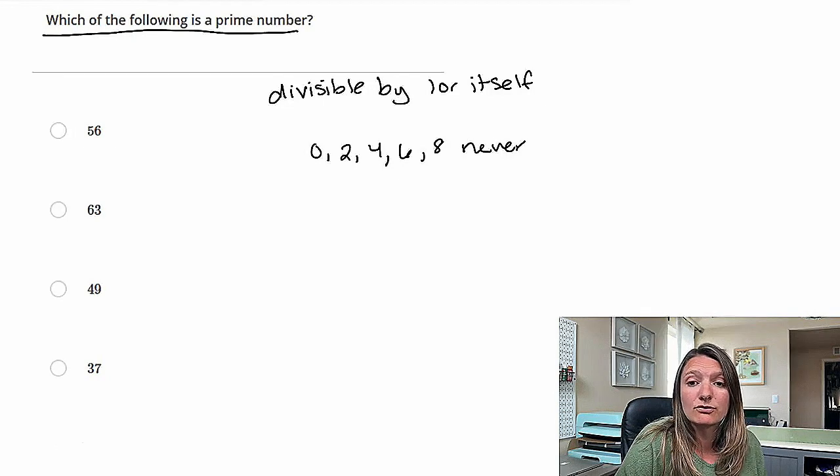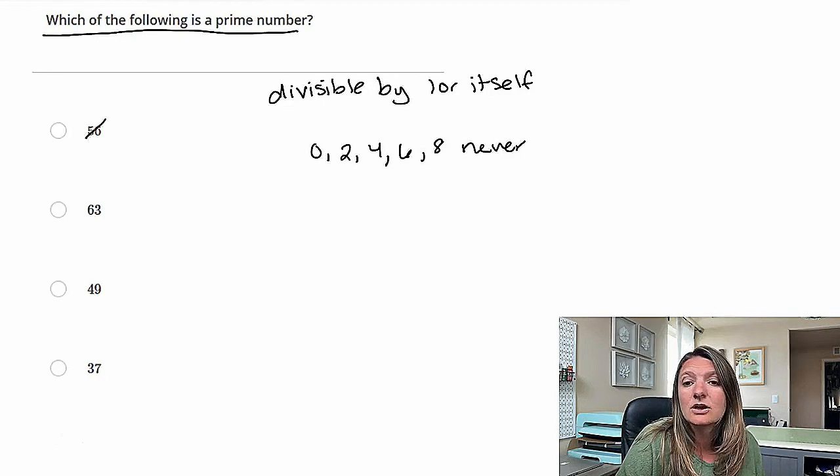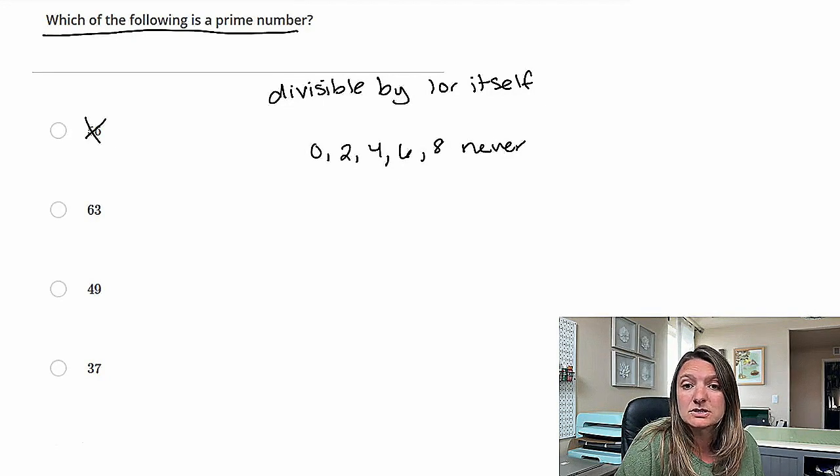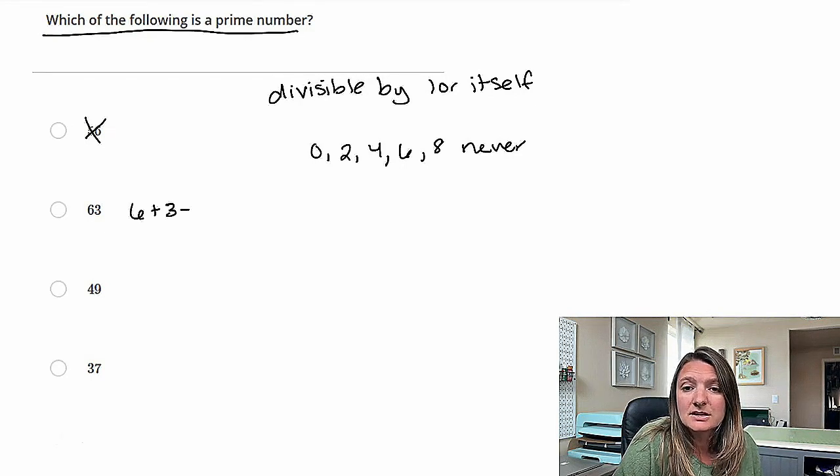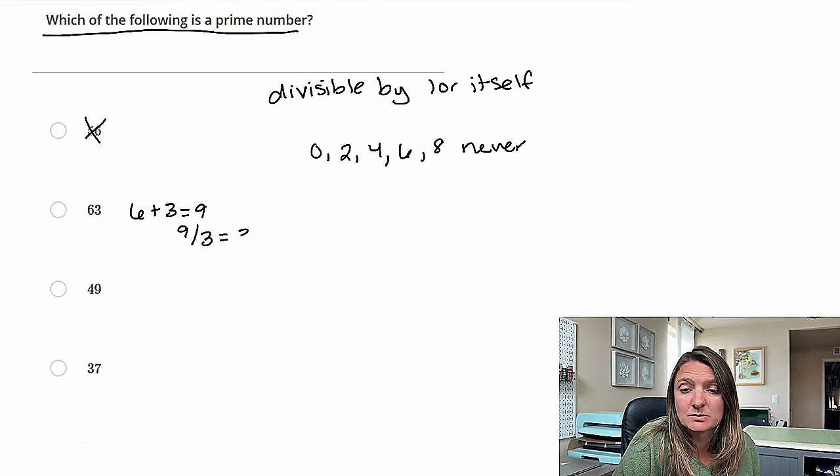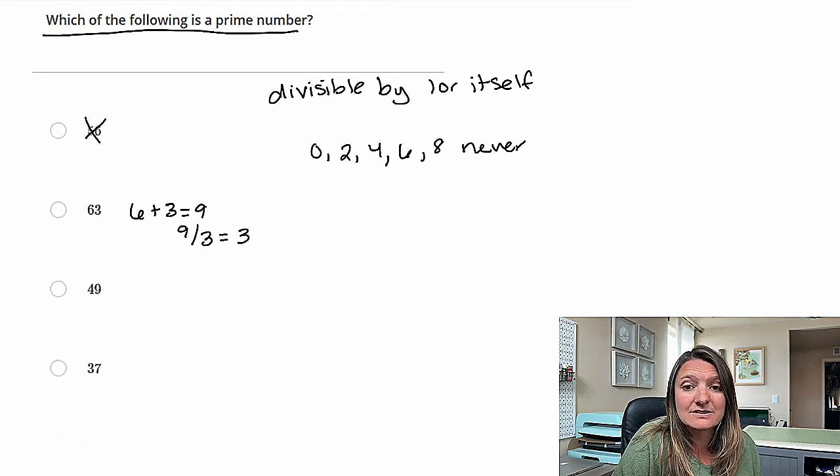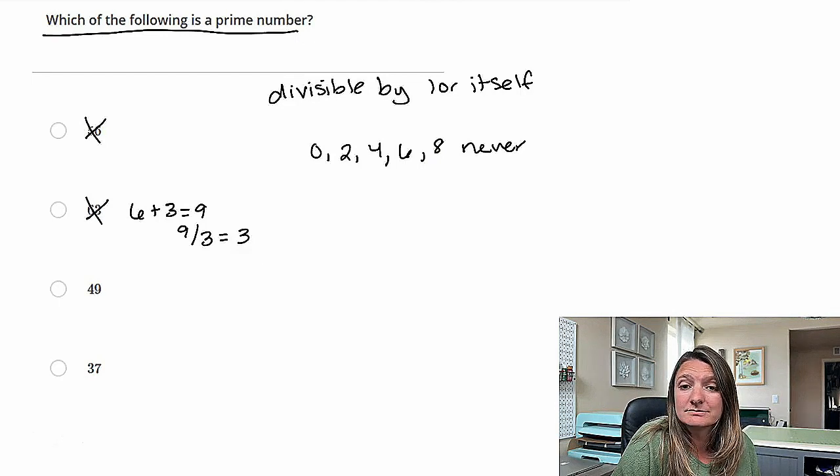So if it ends in zero, two, four, six, or eight, these are never prime numbers. So let's eliminate A because that ended in that. Another clue is that if you add up the digits, so six plus three in the next one, you get nine, and nine divided by three is three. If it ends in a whole number, then that is also not a prime number.